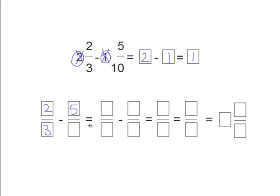Let's move on to the next part. We have 2 over 3 and 5 over 10. We need to come up with a common denominator for the 3 and the 10. To do that we must multiply them by each other. So 3 times 10 and 10 times 3 — that equals 30. We can write 30 in both of these boxes here.